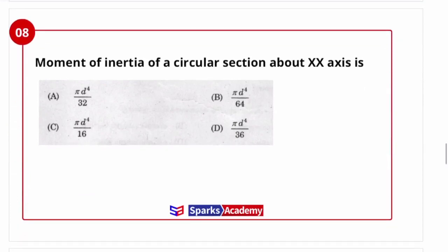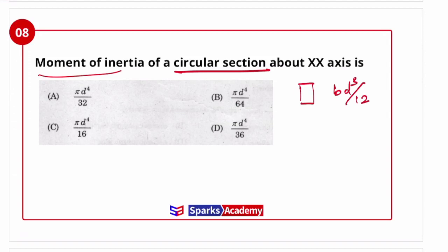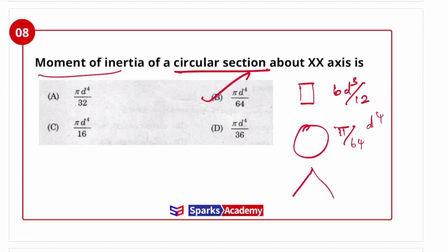Next question: moment of inertia of a circular section. For a rectangular section it is bd³/12. For a circular section it is πd⁴/64. For a triangular section it is bh³/36. For hollow or I-sections, other formulas apply. The answer for circular section is πd⁴/64, so option B is correct.